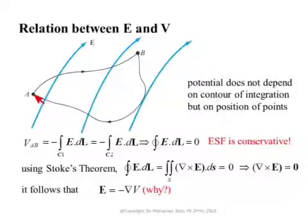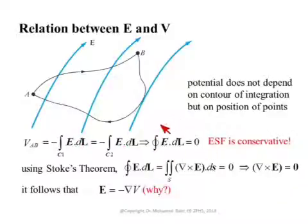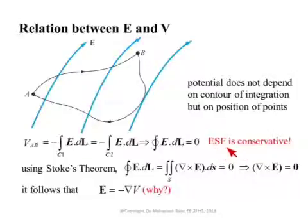I could have done this integral from A to B over contour C1 or over contour C2. Reversing the order of C2 and summing the two together gives a closed contour, and the closed contour integral is equal to zero. This simply says that the voltage difference between a point and itself is zero — the electrostatic field is a conservative field. If you do a closed contour integral of it, you get zero.